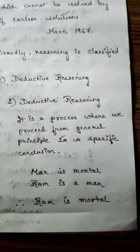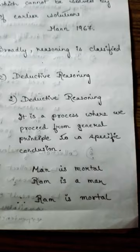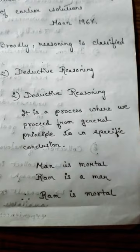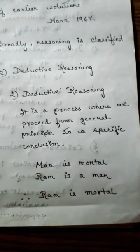The next type of reasoning is deductive reasoning. It is just the opposite of inductive reasoning. In deductive reasoning, we proceed from a general principle to a more specific conclusion. Here is one example: Man is mortal. Ram is a man. Therefore, Ram is mortal.